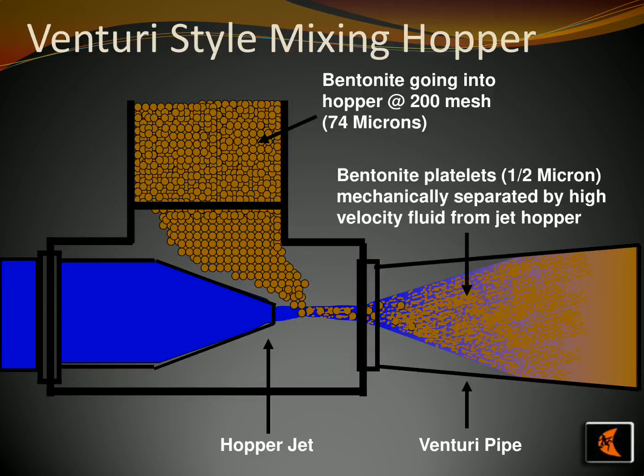The special venturi pipe and hopperjet designed for mixing utilizes bentonite which is milled into a very fine powder, with particles of around 0.5 microns in size, and injected into the hopperjet. The jet hopper produces a high-velocity fluid which mechanically separates the platelets for more effective mixing. The venturi-style mixing hopper allows this process to be carried out in an efficient and cost-effective way.